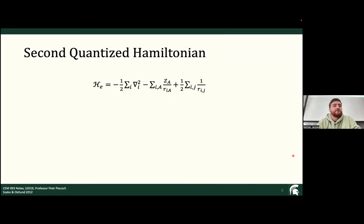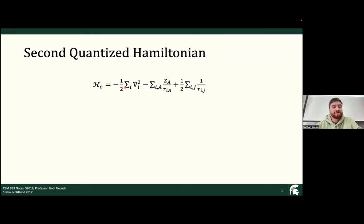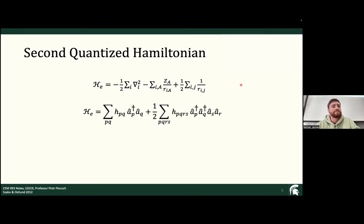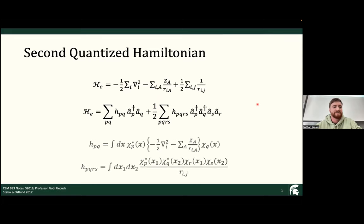We also second-quantize our Hamiltonian. In chemistry, we apply the Born-Oppenheimer approximation, which means our nuclei are so massive compared to the electron that we consider them static — they just don't move at all. So we toss the nuclear contributions to the Hamiltonian out and keep just the electronic Hamiltonian. This includes the kinetic energy term, the Coulomb interaction term, and the electron-electron repulsion term. The second-quantized Hamiltonian has a one-body interaction term and a two-body interaction term, and these H's are integrals — again representing kinetic energy, the Coulomb term, and the electron-repulsion integral.